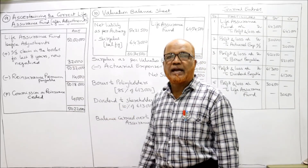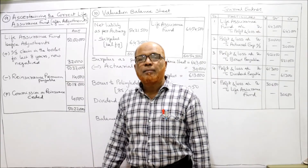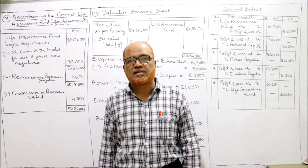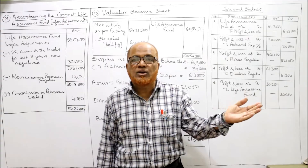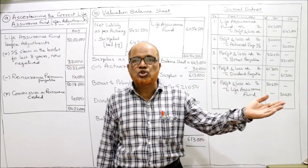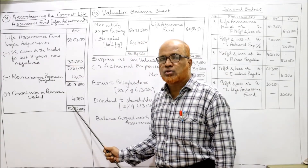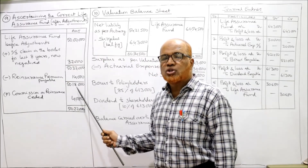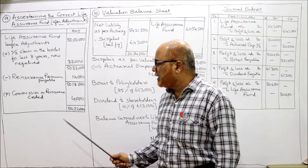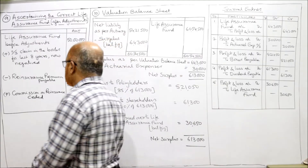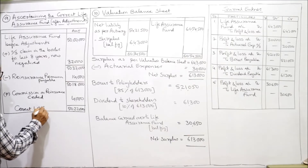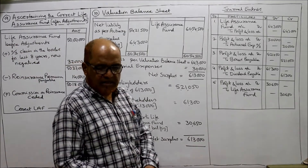Now add commission on re-insurance ceded. ABC company has ceded the re-insurance business to XYZ company; when the business is ceded it will get commission. The commission is ₹4,000, so commission will be added. Re-insurance premium is subtracted and commission is added. So the correct life assurance fund is ₹50,22,000. This is the correct adjusted life assurance fund.